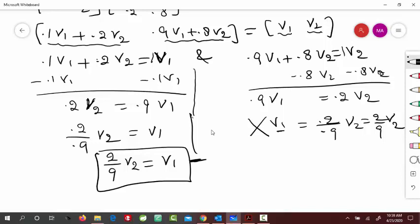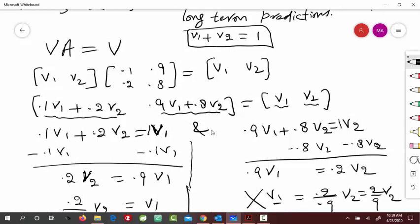And actually, this is the same as this equation already, right? So V1 is 2/9 of V2. Therefore, this is redundant. So we ignore it. So just keep this.